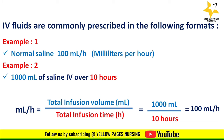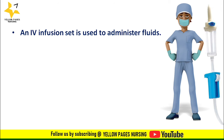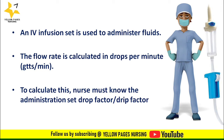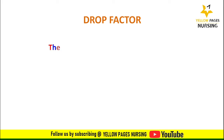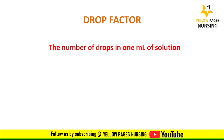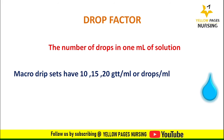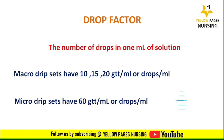An IV infusion set is used to administer fluids, and the flow rate is calculated in drops per minute (gtts/min). To calculate this, the nurse must know the administration set drop factor, also called the drip factor. The drop factor is the number of drops in one ml of solution. Macro drip sets have 10, 15, or 20 drops per ml; micro drip sets have 60 drops per ml.